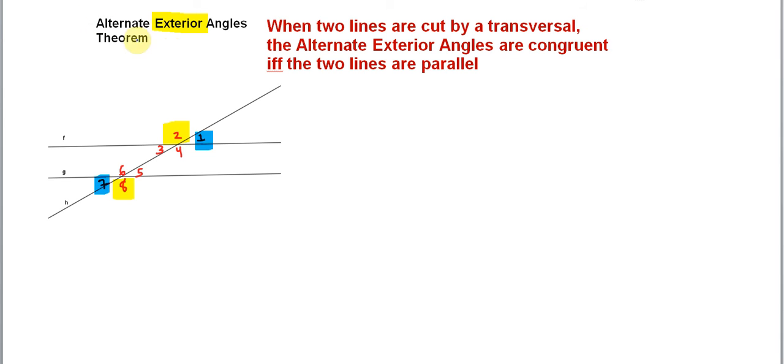Let's see what this theorem says. When two lines are cut by a transversal, the alternate exterior angles are congruent if and only if the two lines are parallel. This is like saying angle 1 is congruent to angle 7, and angle 2 is congruent to angle 8, if and only if lines F and G are parallel to each other.